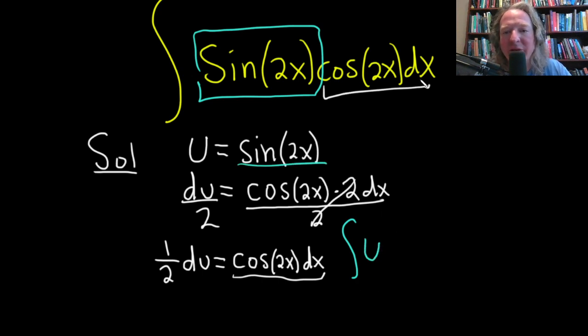And then we're left with cosine 2x dx. Well, that's 1 half du. So this is just 1 half du. Pretty amazing. It's kind of cleaned up. So sine 2x is just u, and then cosine 2x dx is just 1 half du.